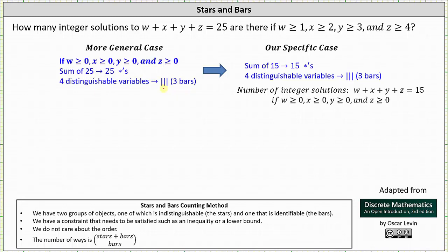In this more general case, the number of integer solutions would be the number of strings of length 28 with 25 stars and three bars, which is 28 choose three. But this doesn't work for our case because we have different restrictions on w, x, y, and z.